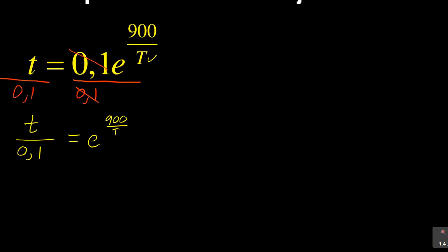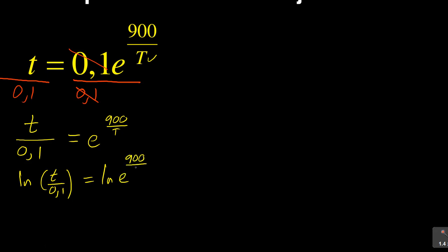As I said, you need to know the lesson on logarithms — you can visit our logarithms lesson for that. I'm going to introduce ln on both sides. So I'm going to say ln of T over 0.1 is equal to ln of e to the power 900 over T. I didn't introduce log because the moment I'm given e, I can simply use ln. Even if you wanted to use logarithms it's still fine — it would still give you the same answer.